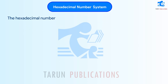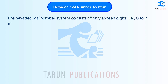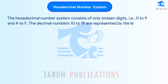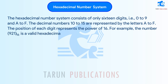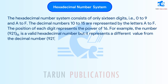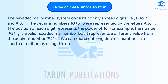The hexadecimal number system consists of 16 digits, i.e., 0 to 9 and A to F. The decimal numbers 10 to 15 are represented by the letters A to F. The position of each digit represents the power of 16. For example, the number 921 base 16 is a valid hexadecimal number, but it represents a different value from the decimal number 921 base 10. We can represent long decimal numbers in a shortcut method by using this number system.